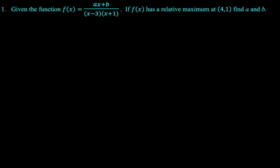Given the function f(x) equals (ax + b) over the quantity (x - 3) times the quantity (x + 1), if f(x) has a relative maximum at (4, 1), find a and b.